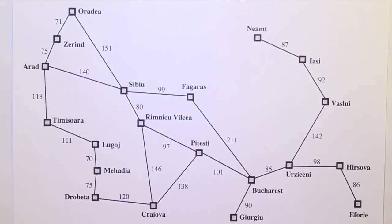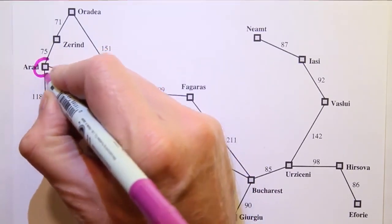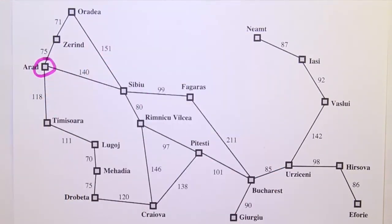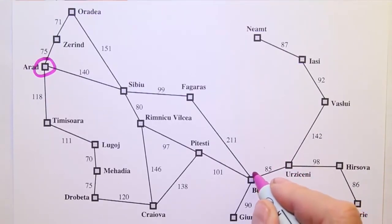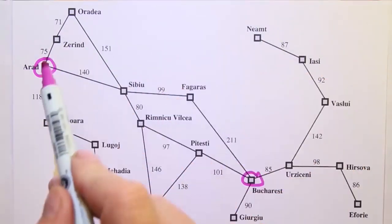Let's see how the definition of a problem maps onto the Romania road-finding domain. First, the initial state — let's say we start off in Arad. The goal test: let's say that the state of being in Bucharest is the only state that counts as a goal, and all other states are not goals.